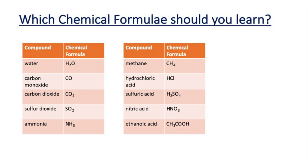I've also included acids because at GCSE one of the big topics is acids, bases, and salts. The four acids I would expect you to know the chemical formula for are hydrochloric acid, sulfuric acid, nitric acid, and ethanoic acid. These compounds all have one thing in common — they're all made up of non-metals. We call this type of compound a covalent compound. In the bonding topic you'll learn more about covalent compounds and understand their structure and properties.